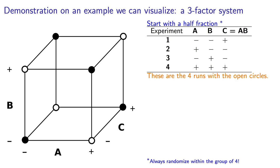Trying to visualize graphically what a half fraction, as well as its complementary half fraction looks like, is only feasible for a system of three factors, A, B, and C. First, we would do the runs with open circles and complete all our analysis to find out which of the factors is significant, and by how much they affect the outcome.